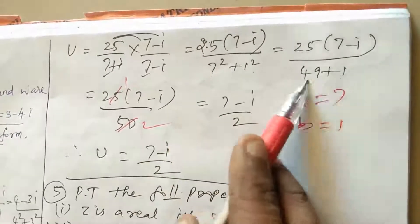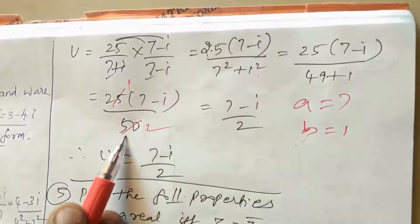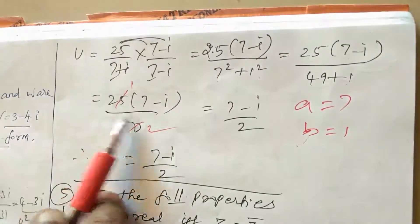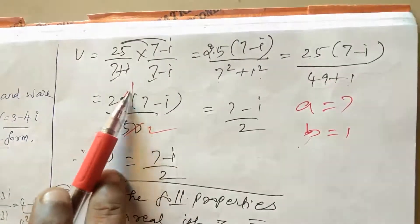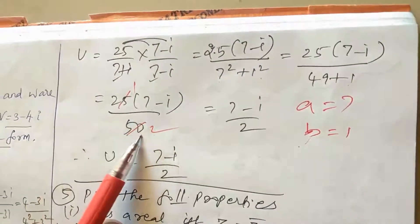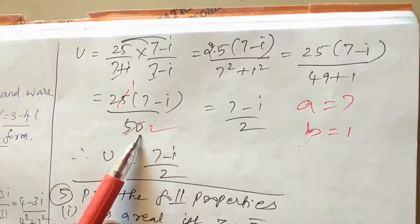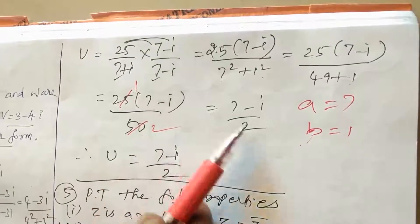Simplifying: 25 divided by 50 gives one half. Therefore U equals (7 minus i) divided by 2.